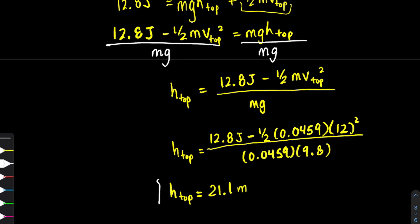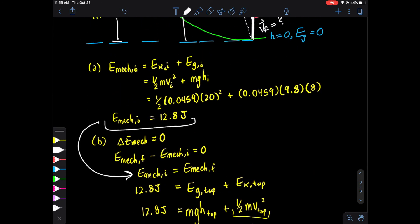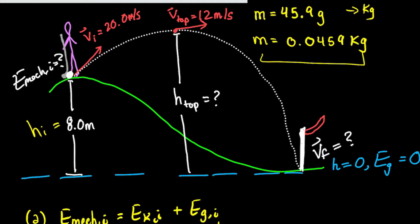That result of 21.1 meters seems reasonable given that the initial launching height was eight meters and the ball achieves 21.1 meters at its maximum height. For part C, we find the speed when the ball strikes the green. Again, the change in mechanical energy is zero, so mechanical energy initial equals mechanical energy at the moment just before it strikes the ground.